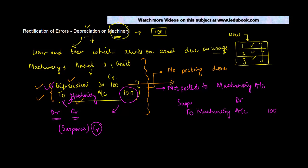What if instead of machinery the depreciation account was not debited? So let's say the third case is not posted to depreciation account. Big deal - we know very well that if it is not posted to the depreciation account we now need to do that posting.